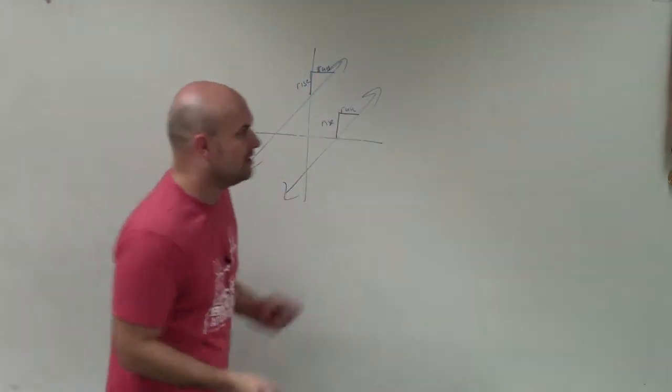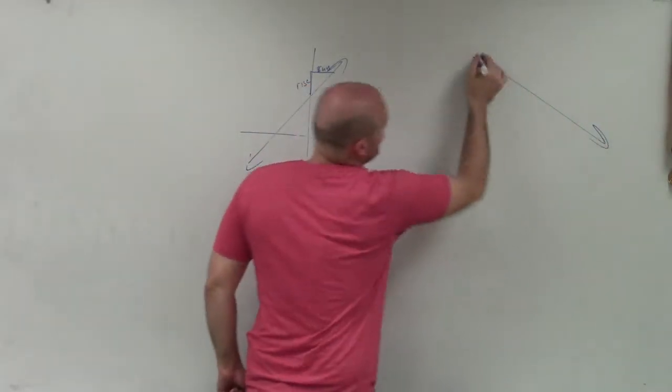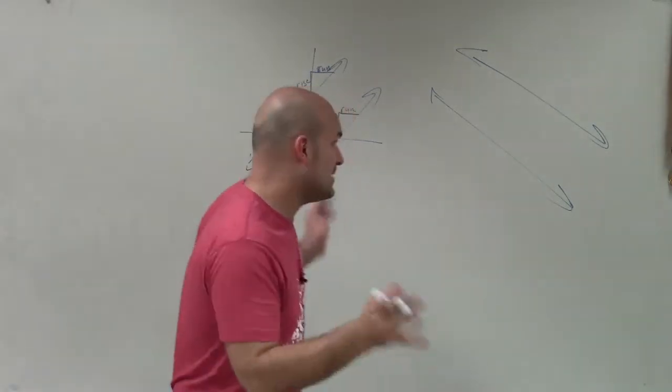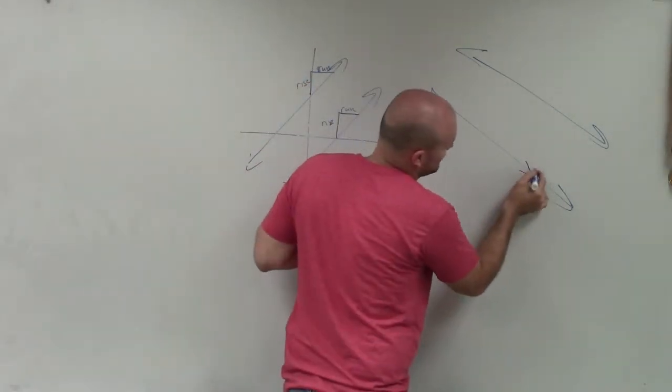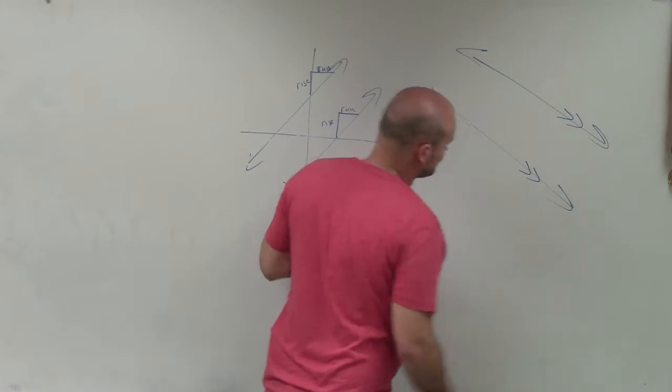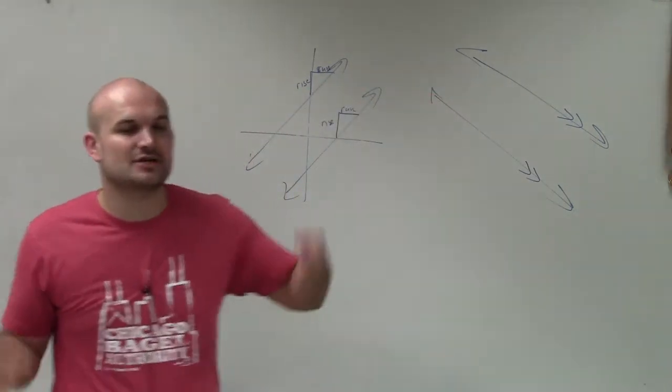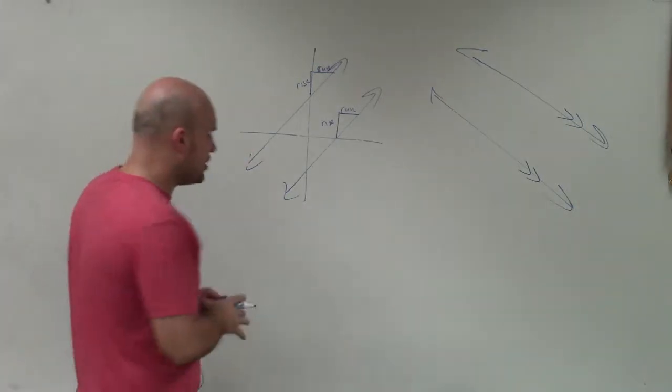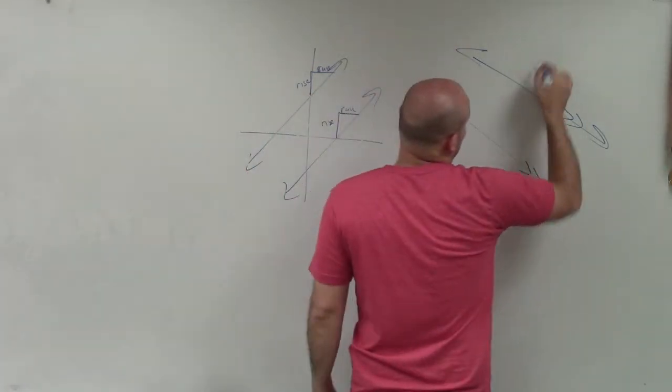So when we're talking about parallel lines, not always are parallel lines going to be graphed on a coordinate system. We can just say, hey, here's two parallel lines. And the way that we represent parallel lines is we do a double arrow to show that these lines are going to continuously run in these directions without ever intersecting.